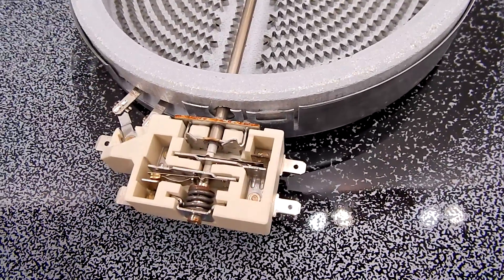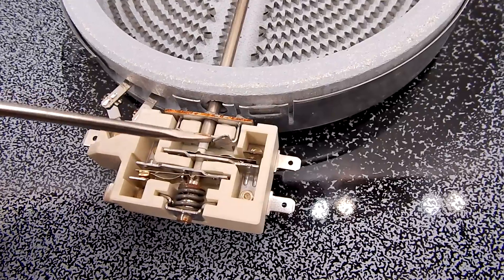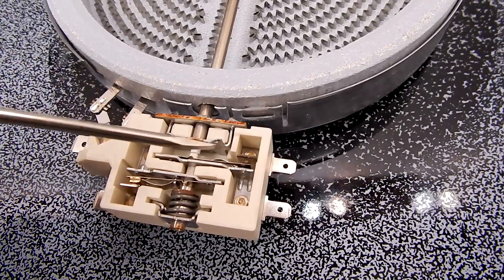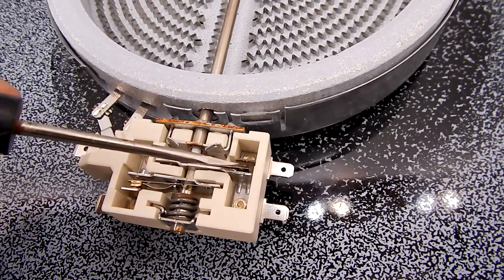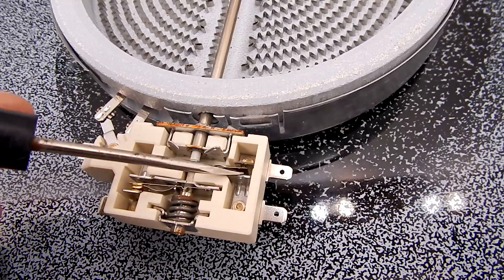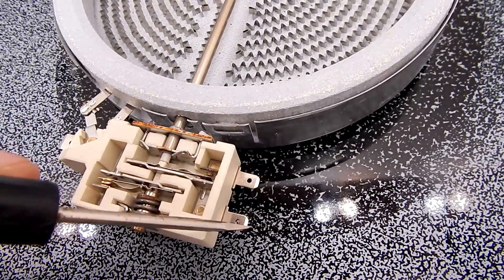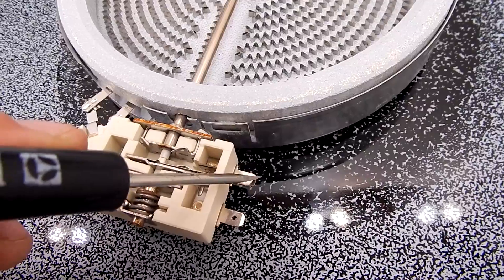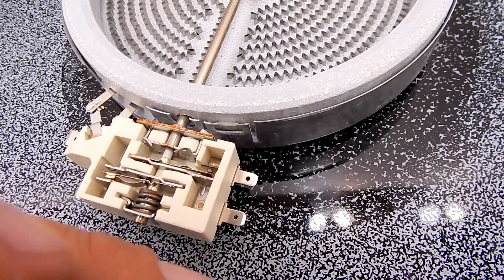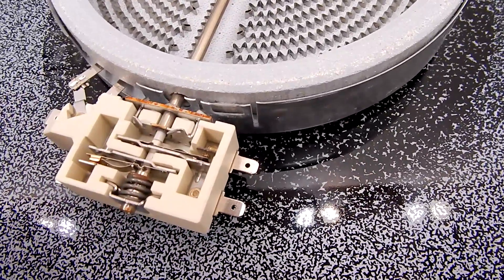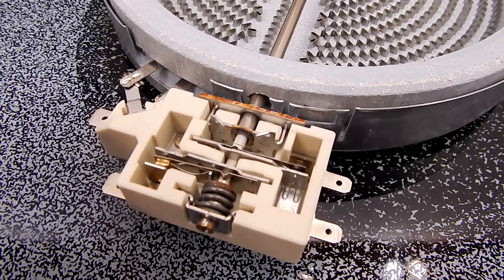As this burner starts to warm up just a little bit to where you wouldn't be able to put your hand on the glass without burning yourself, this little contact will open up and create a circuit from here straight through to here and go down to your hot surface indicator light. That's basically how one of those works.